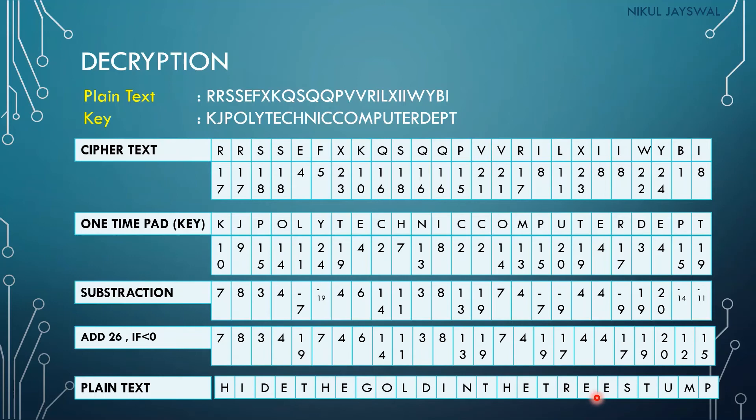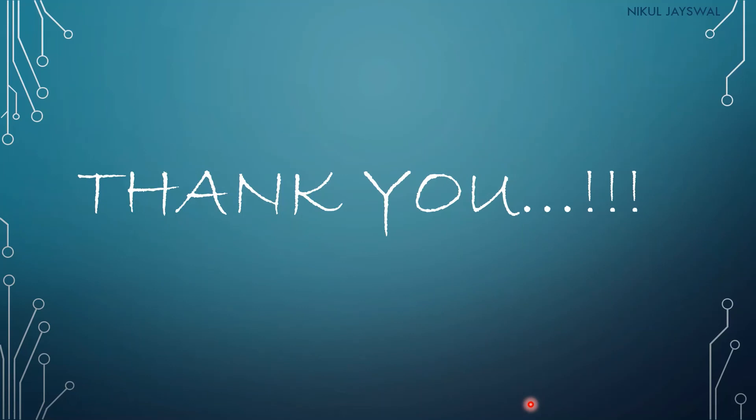Decrypting all values gives back the plain text: 'hide the gold in the tree stump'. This was all about the Hill cipher and the Vernam cipher. I hope you understood all the concepts discussed in this video lecture. Thank you so much.